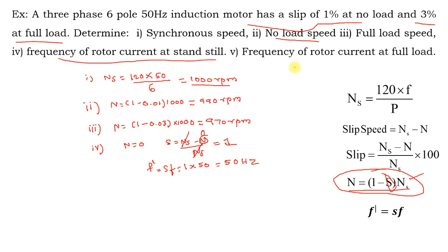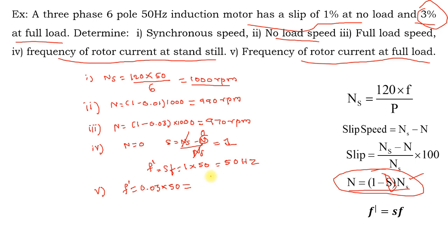Finally, rotor frequency at full load: full-load slip is 3%, so s = 0.03. Rotor frequency f' = 0.03 × 50 = 1.5 Hz.